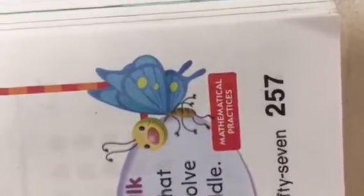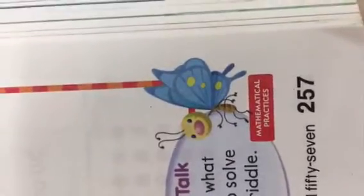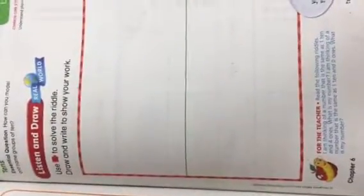Good afternoon guys. Today we are going to be working on lesson 6.5, and that's working on tens. Our essential question is how can you model and name groups of 10? I need you to get to page 257. If you need a minute to get there please pause the video. It says use cubes to solve the riddle. Draw and write to show your work. I am thinking of a number that is the same as one 10 and four ones. What is my number?